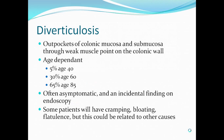Let's begin with a description of diverticulosis. These are outpockets of colonic mucosa and submucosa through the weak muscle points in the colonic wall. This is largely age-dependent: 5% are present at age 40, 30% at age 60, and 65% at age 85. It's often asymptomatic and an incidental finding on endoscopy, and some patients will have cramping, bloating, and flatulence, but this could be related to other causes such as IBS. There is a theory that a Western low-fiber diet could be to blame for this.